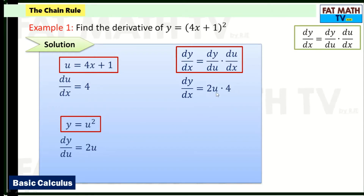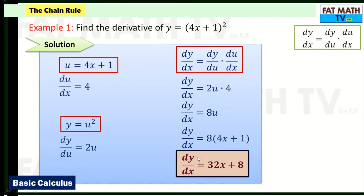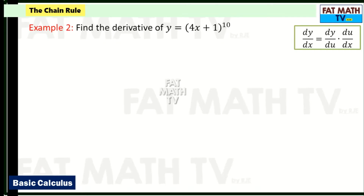So dy/dx equals dy/du times du/dx, which is 2u times 4, giving us 8u. Substituting back, u = 4x + 1, so dy/dx = 8(4x + 1) = 32x + 8. As a shortcut: bring down the exponent, so 2(4x + 1)^1, then multiply by the derivative of (4x + 1), which is 4.